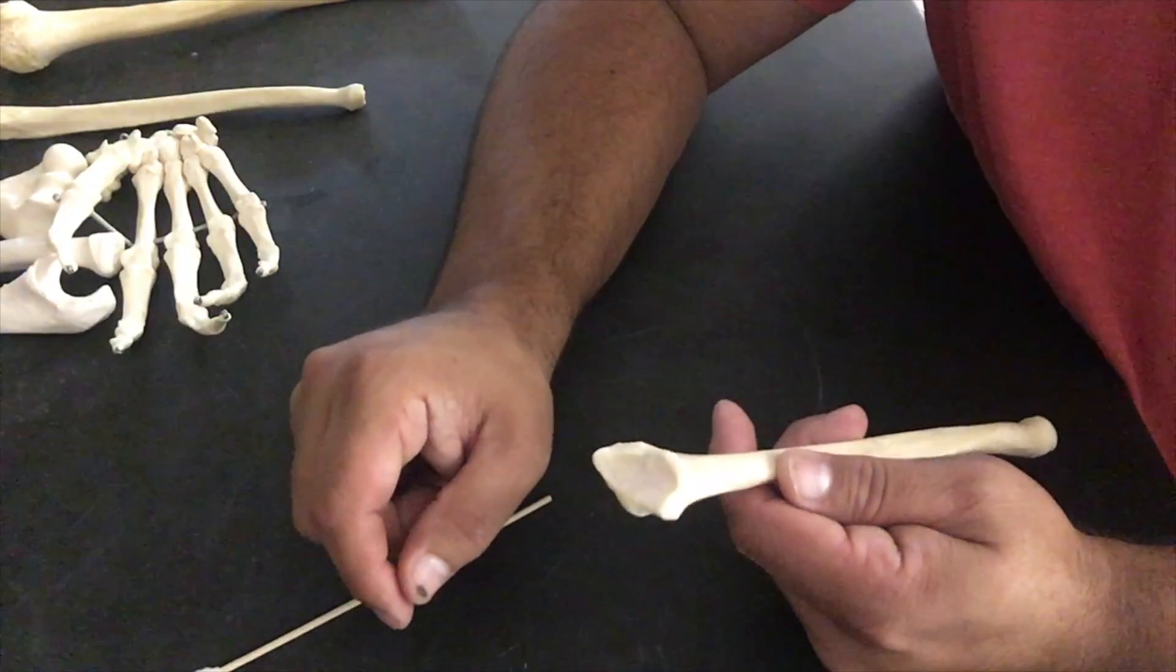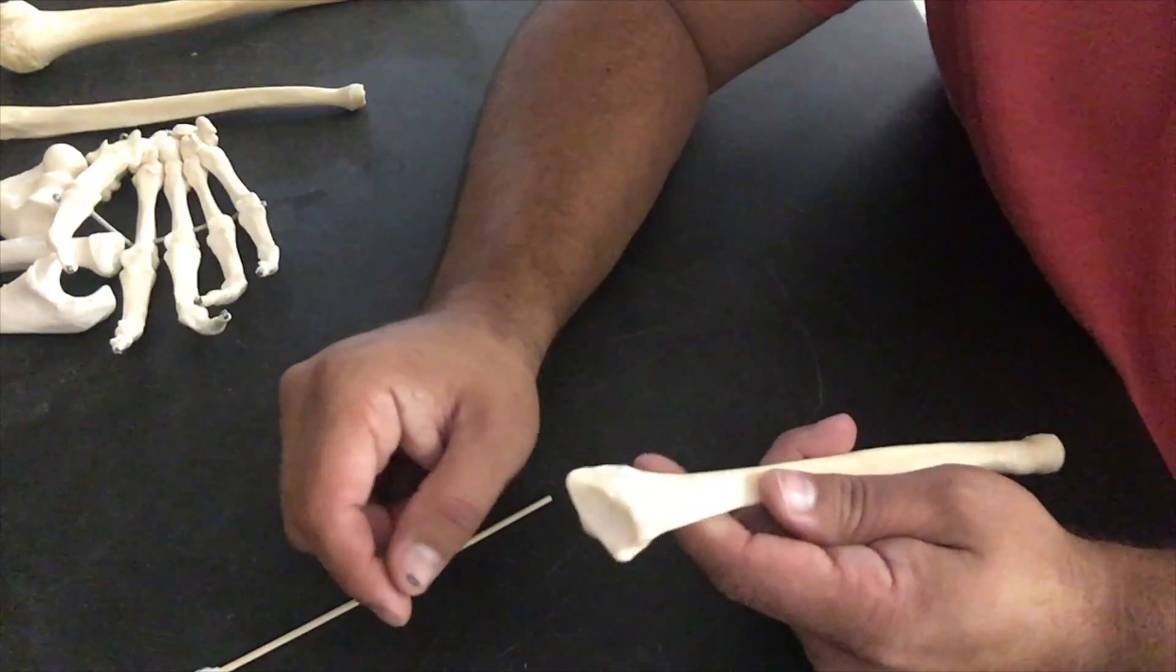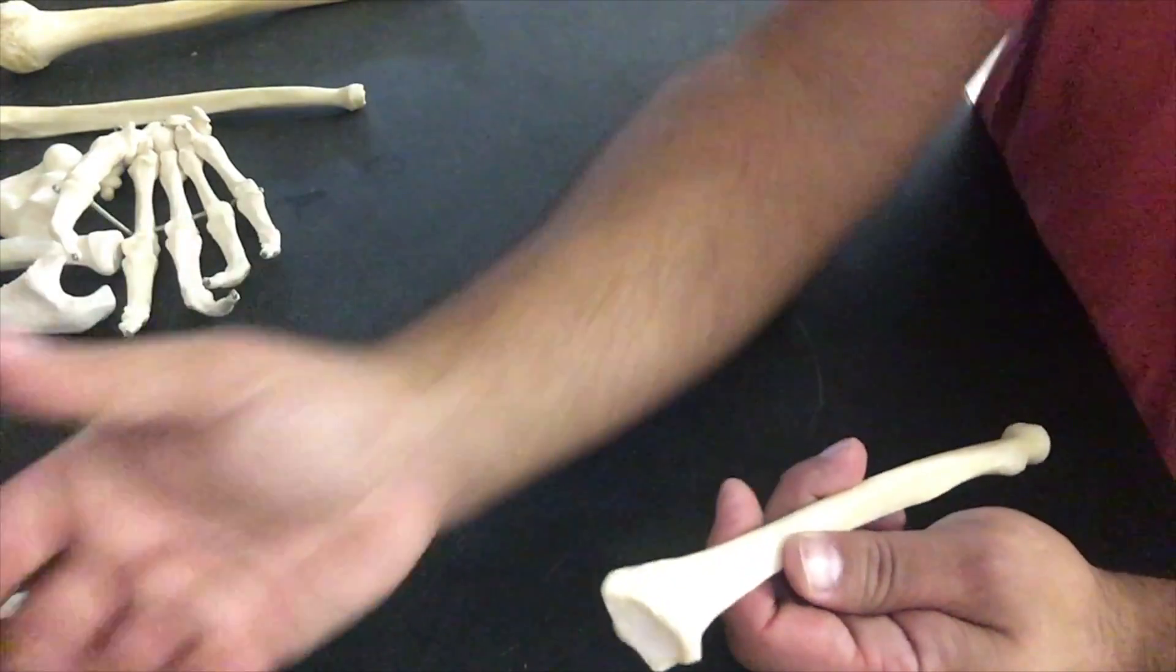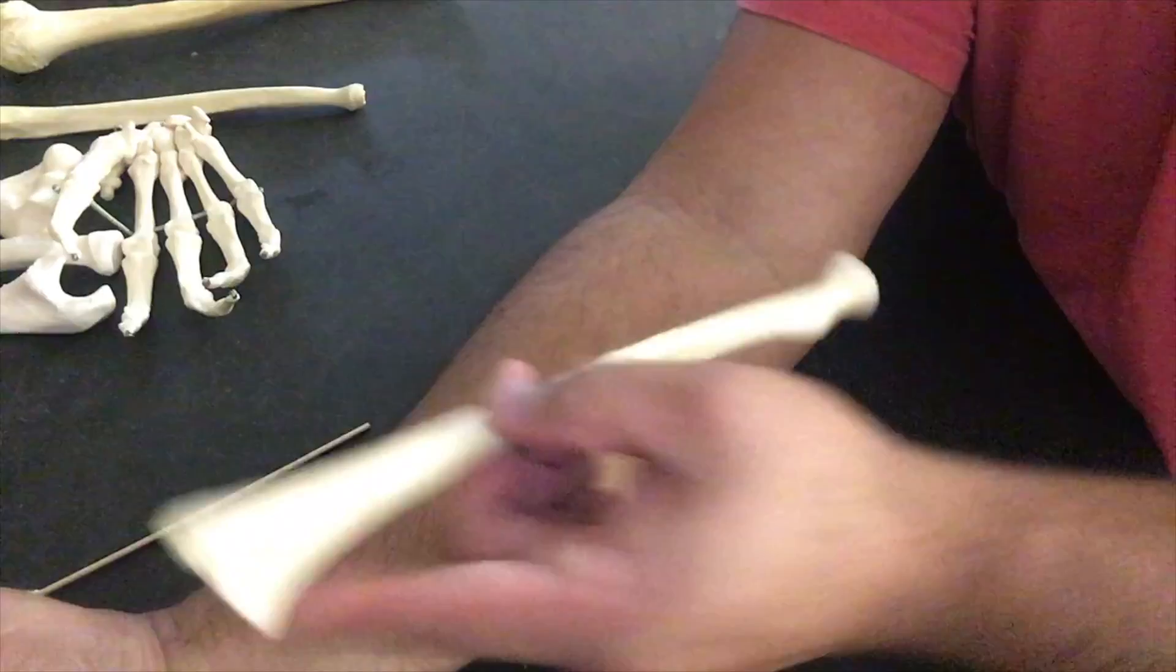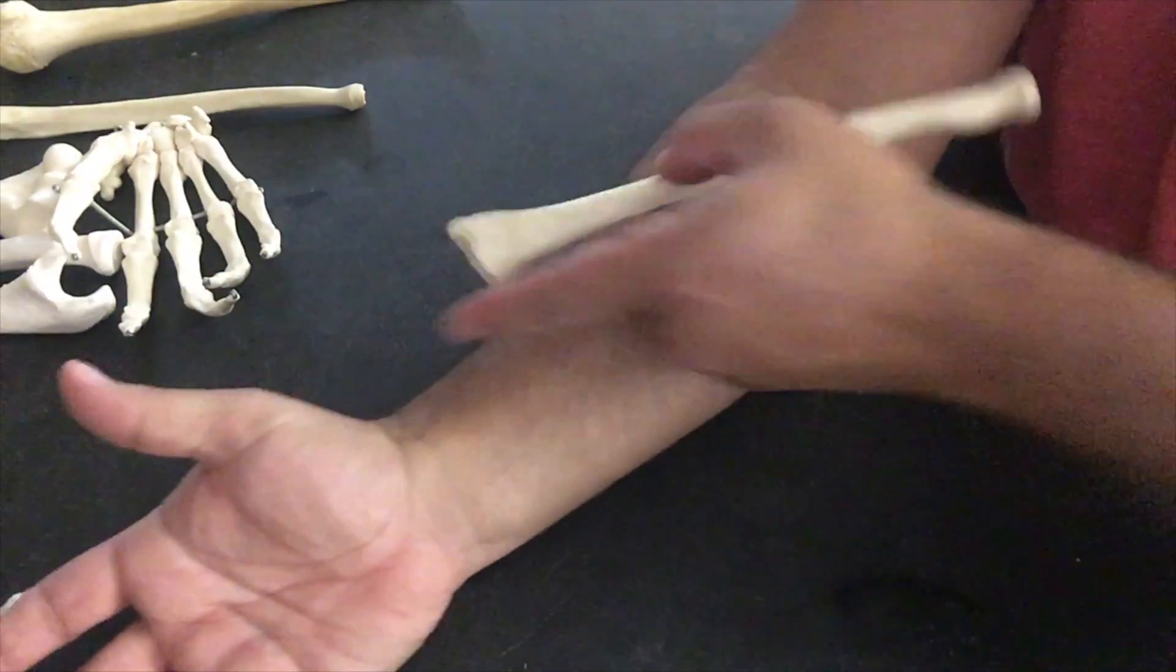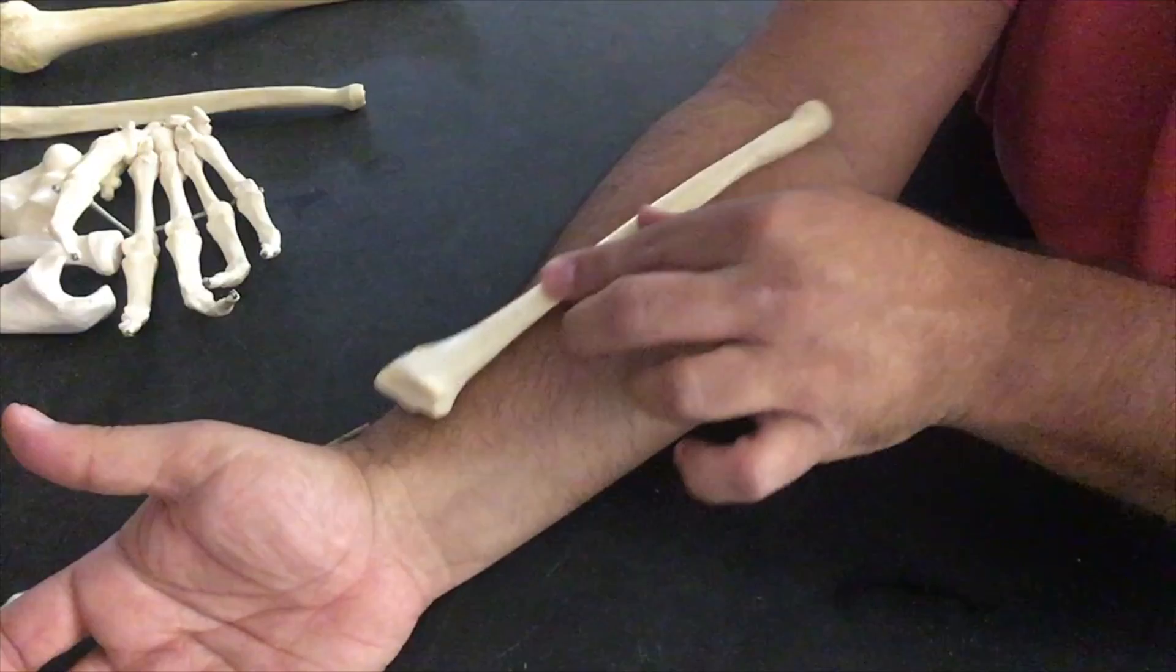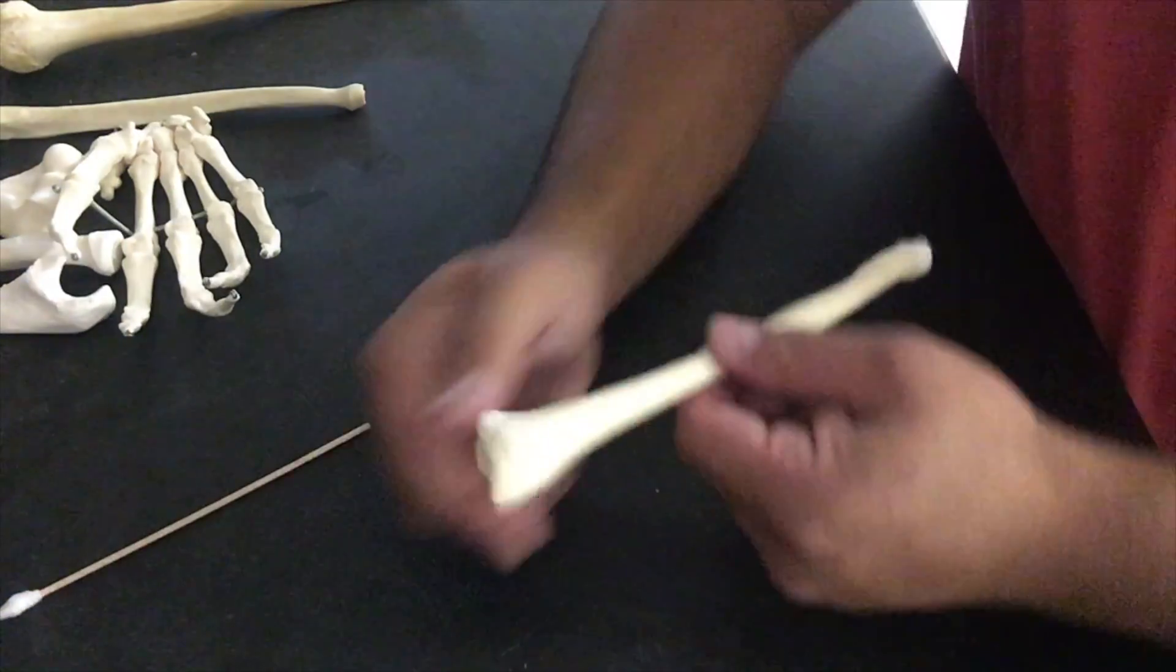The radius is relatively simple—there aren't many landmarks you're going to be responsible for. But again, the hardest thing is going to be identifying if it's a left or right bone. So here's our example. We're going to put it on our body. Let's put my arm out. We know it's a thumb side bone, so let's put it here.